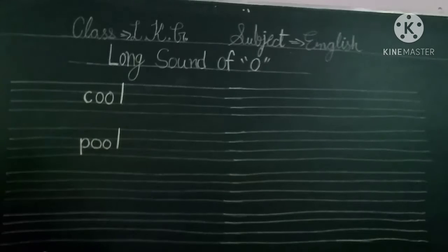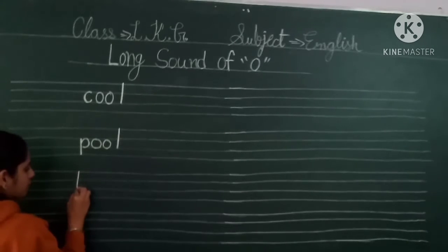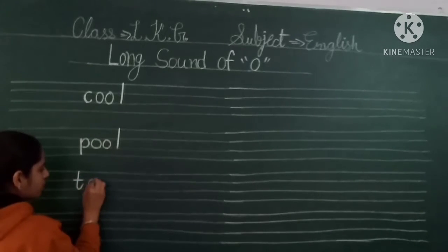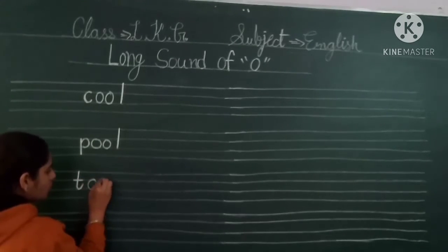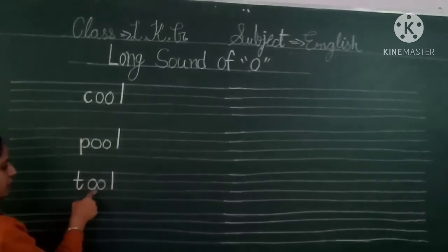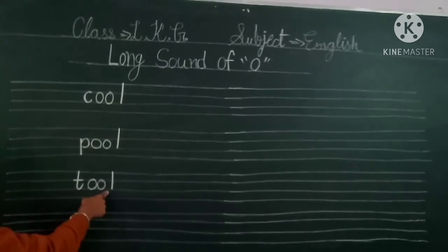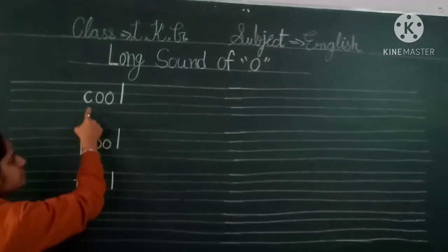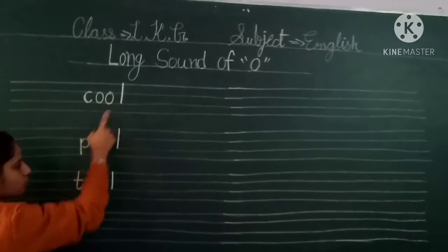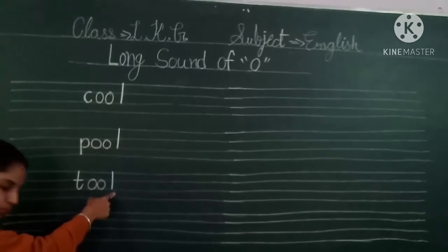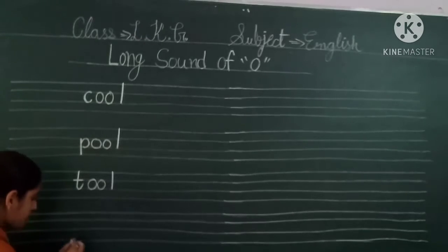Next. T Double O — Tool. T Double O — Tool. C Double O — Cool. E Double O — Cool. Next.